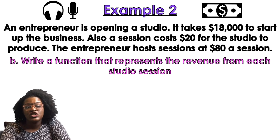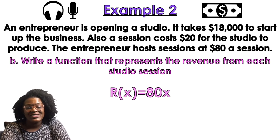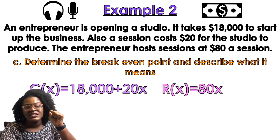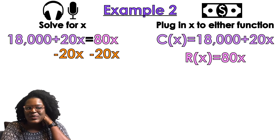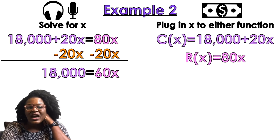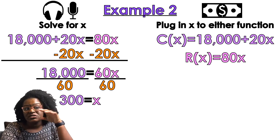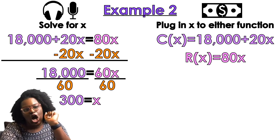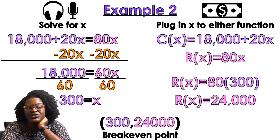Part C: determine the break-even point. I have C and R. For them to be even, I set them equal: 18,000 + 20x = 80x. Subtract 20 from both sides — I get 60x. Divide both sides by 60 — x equals 300. That's 300 sessions. I plug 300 into R: 80 times 300 gives me $24,000. The break-even point is (300, 24,000).